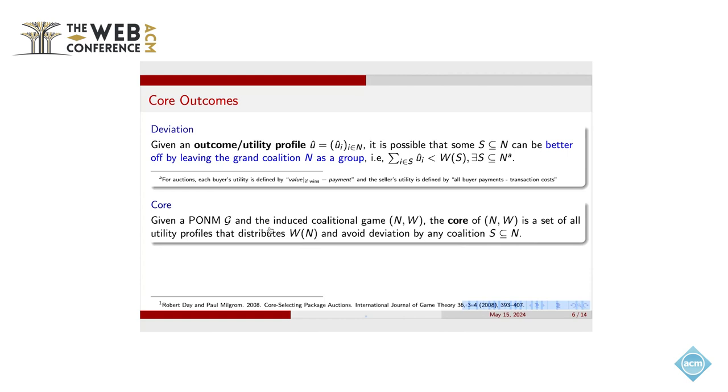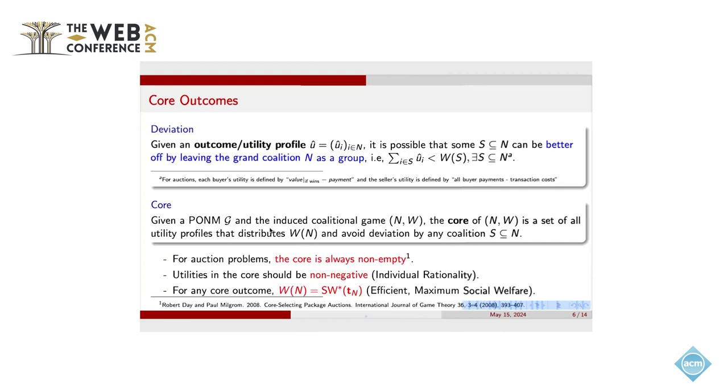As a comparison, it's just like the set of Nash equilibria of the traditional game. But in auction, we find that in literature, it is proved that the core is always non-empty. And also the utility in the core should be non-negative. This means the auction should be IR, that each buyer does not want to leave this auction market. And also for the core outcome, the core has a central property that it should be efficient. That means the core utility allocation should maximize the social welfare.